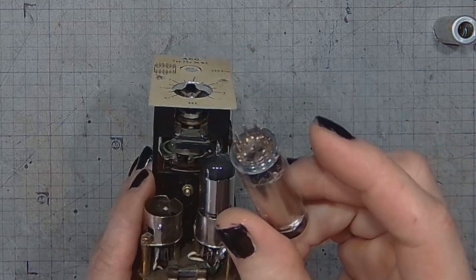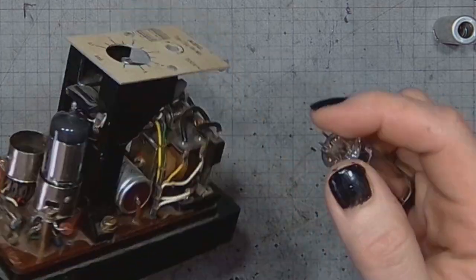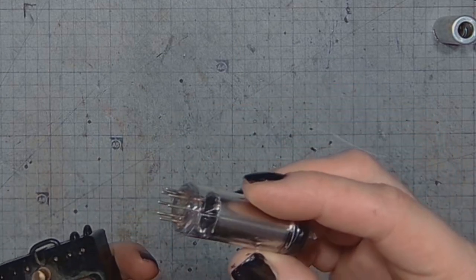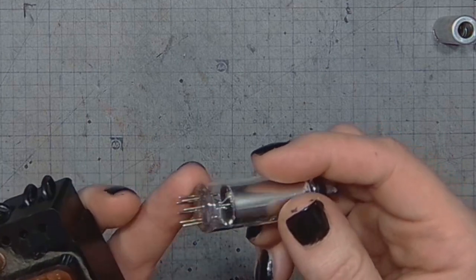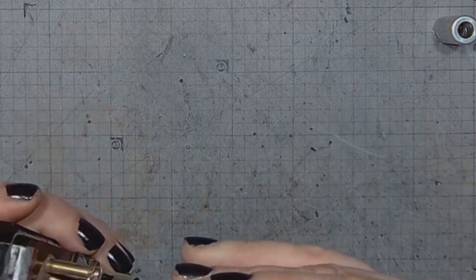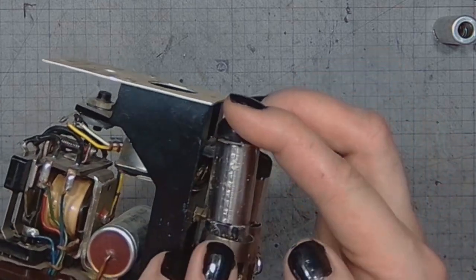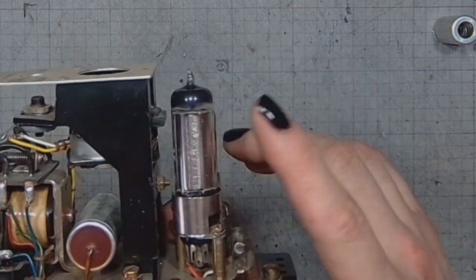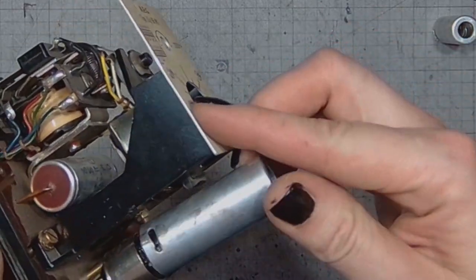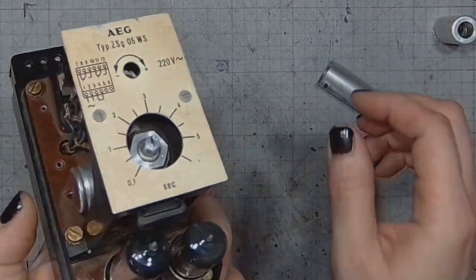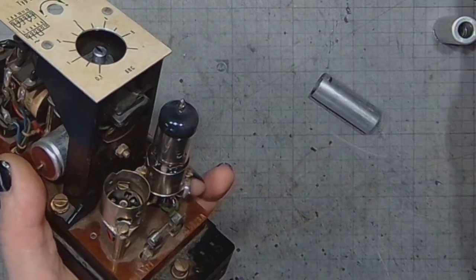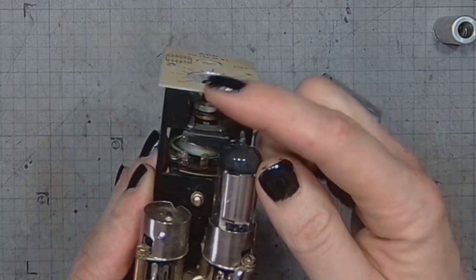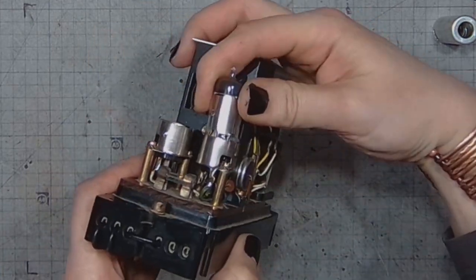This is in fact the neon voltage regulator tube, like 0D2 or something like that. The markings on the bulb are damaged beyond repair, so there's no way of determining the exact type of the tube without doing any measurements.